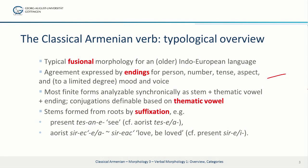Most finite forms are analyzable synchronically as stem plus thematic vowel plus ending. Traditionally, and in most grammars today, different conjugations are defined based on the thematic vowel, which can be either e, i, a, u, or in one case, o. So all the different vowels.